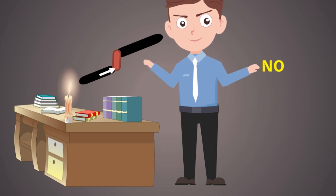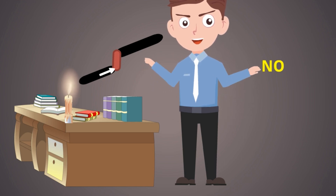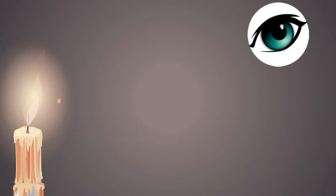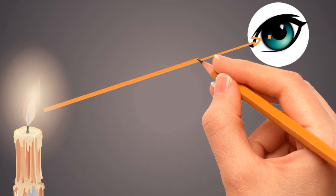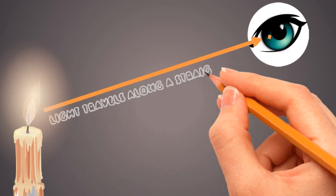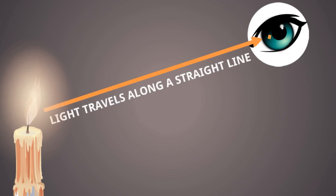Because light comes from the candle and it will be obstructed, so it will not be reaching our eyes. So we can say light rays coming from the candle travel to our eyes in a straight line. We can say easily: light travels along a straight line.